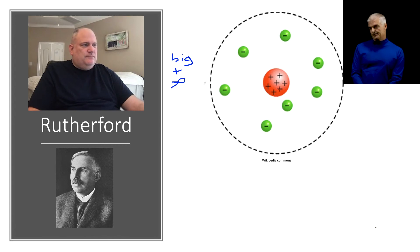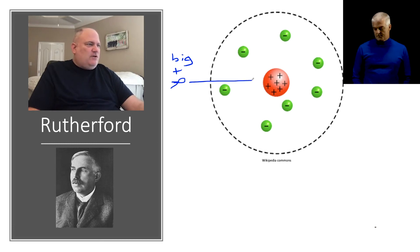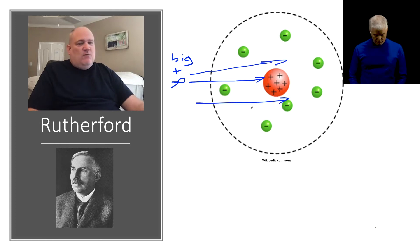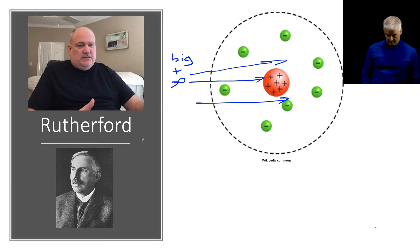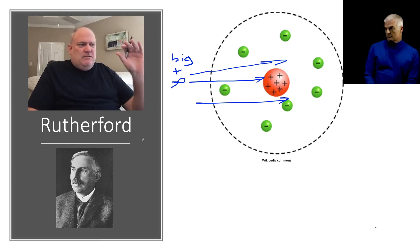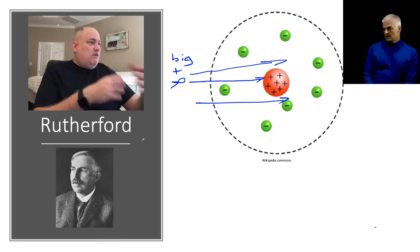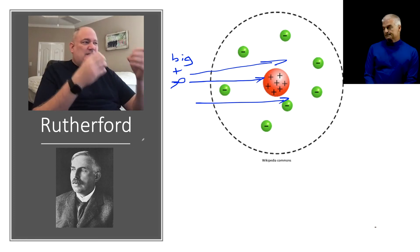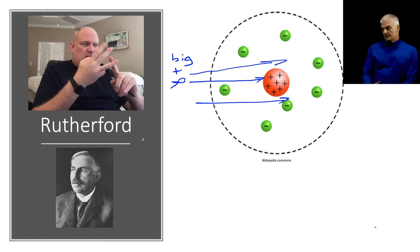Rutherford concluded that if all the positives were really compact and concentrated in the center, an alpha particle flying toward that center could ricochet off. This is the discovery of the nucleus — a very small, dense, positively charged center. The electrons are on the outside. Thomson had the right idea about positive and negative, but didn't realize the positives were all concentrated in that tiny spot in the middle.